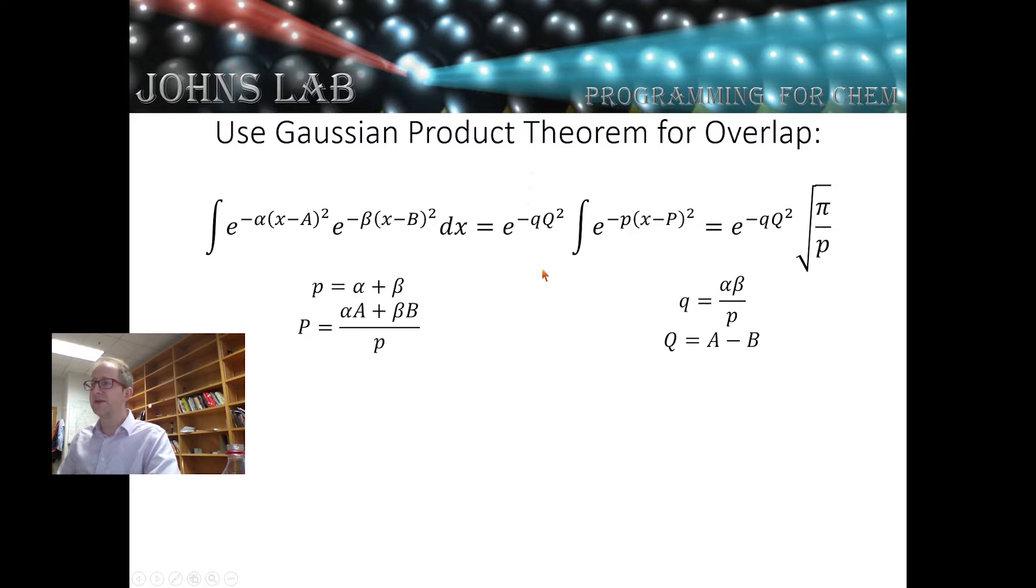The resulting integral will just be the new amplitude factor e^(-q(a-b)²) times the integral overall space of this smaller Gaussian, which will be the square root of π/p.